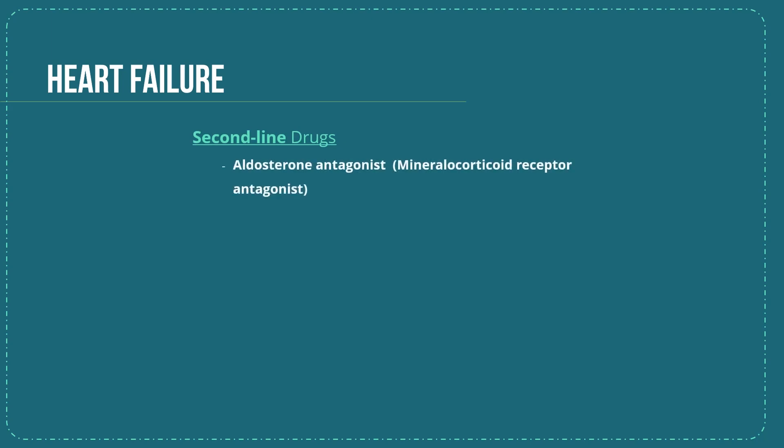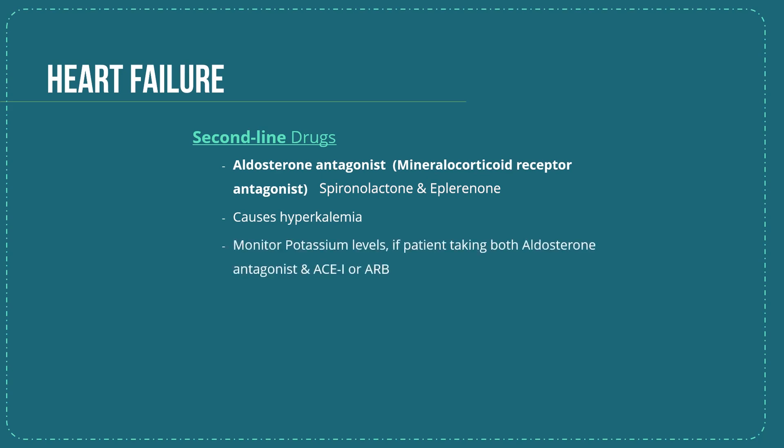The second-line treatment is an aldosterone antagonist, or mineralocorticoid receptor antagonist — for example, spironolactone and eplerenone. It should be remembered, however, that ACE inhibitors and aldosterone antagonists both cause hyperkalemia, so if a patient is on this combination, potassium should be monitored.